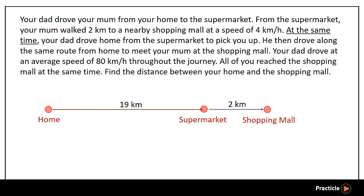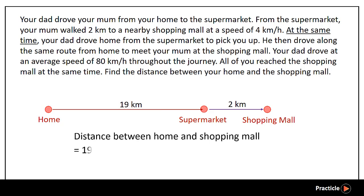Now that we know the distance between your home and the supermarket, and the distance between the supermarket and the shopping mall, we can find the distance between your home and the shopping mall. All you need to do is take 19 plus 2, and this gives us our final answer of 21km.